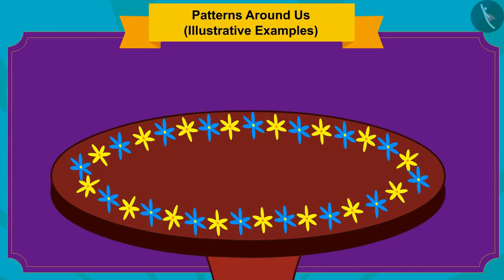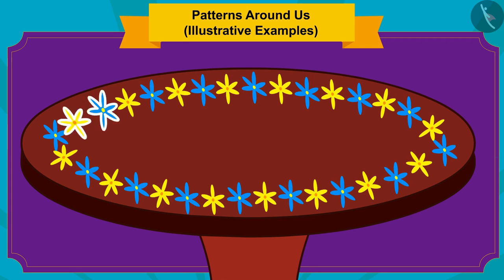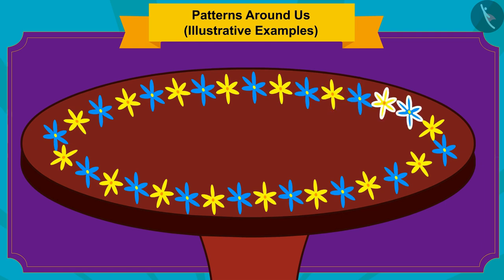Children, in order to identify the rule of any pattern, you just have to see what is being repeated in that pattern. Here, a group of yellow flowers and blue flowers is formed, and then a pattern is made by repeating this group again and again.